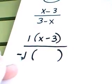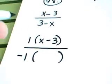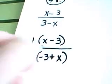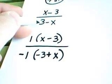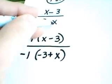When I pull a negative 1 or factor a negative 1 out of the denominator, we're left with negative 3 and we're left with a plus x. Notice, negative 1 times negative 3 to give me 3, negative 1 times x to give me the opposite of x.